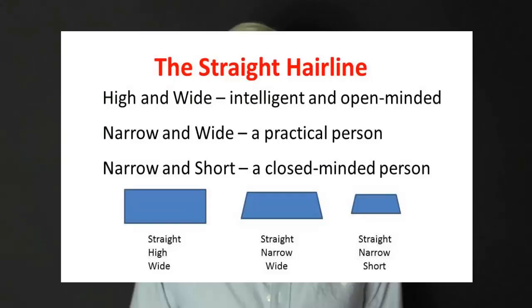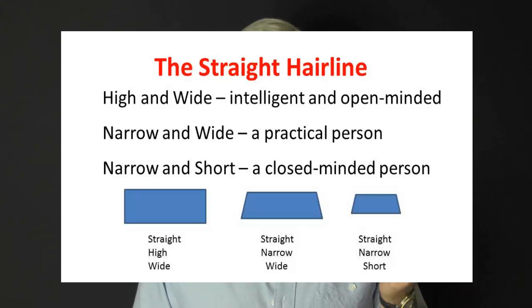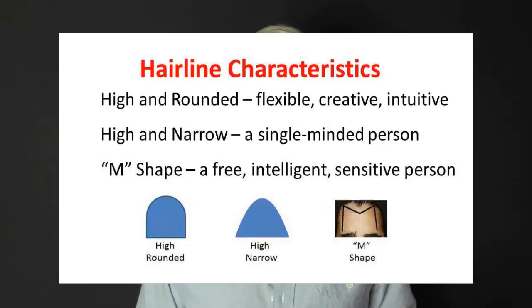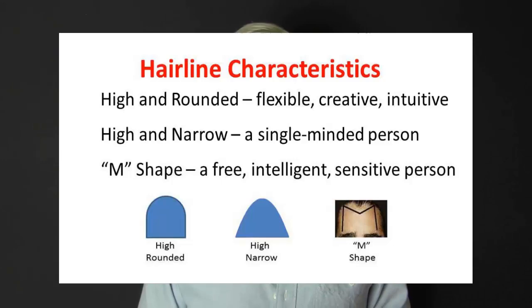Now for some points about the hairline. Generally, just take note of how high it is, how wide it is, and whether it's rounded or straight. If it is straight, high and wide, then you are looking at an intelligent, open-minded person. If it is straight, narrow and wide, it is likely to be a practical person. If it is straight, narrow and short, you are probably with a closed-minded person — they usually have an external frame of reference. If it is high and rounded, you are looking at a flexible, creative and intuitive person. If there is a high and narrow forehead, you have a single-minded person who only values their own opinion. An interesting hairline is the M shape — this person enjoys feeling free and can be highly intelligent, but they are often rather sensitive.